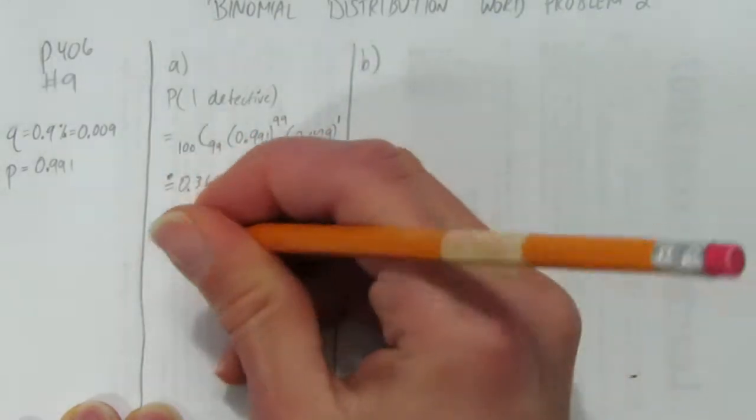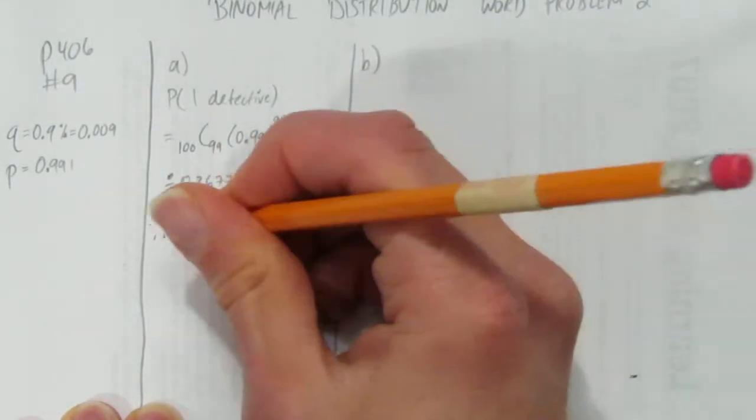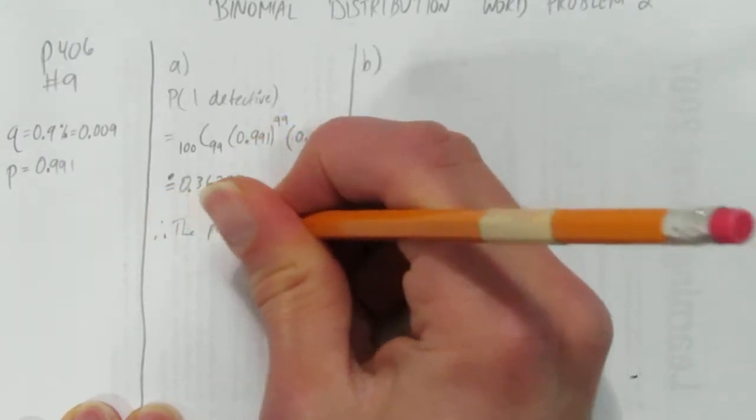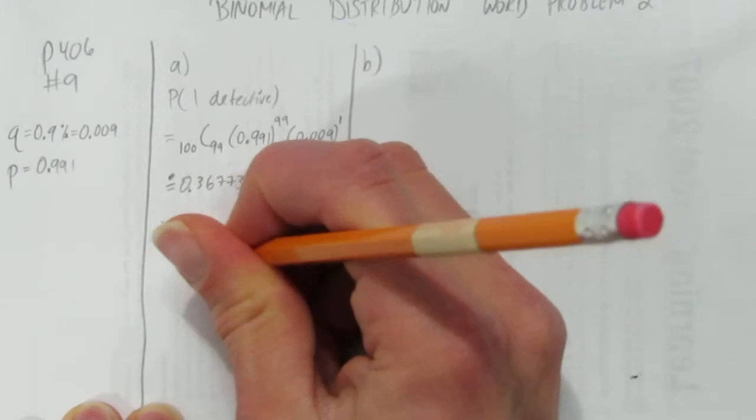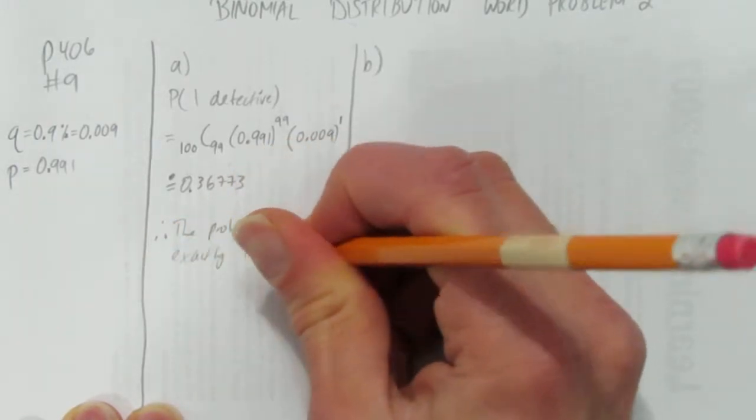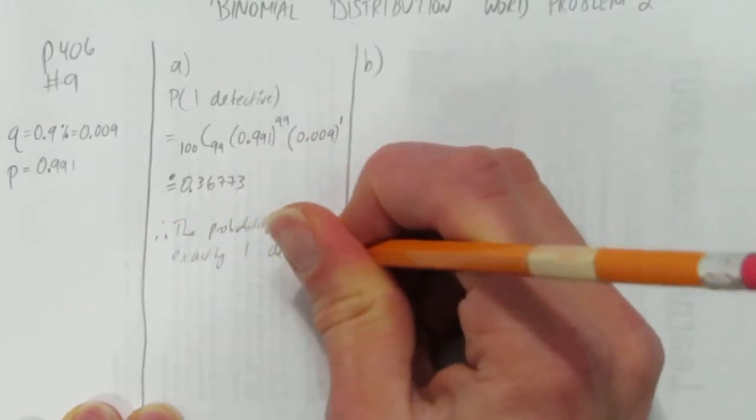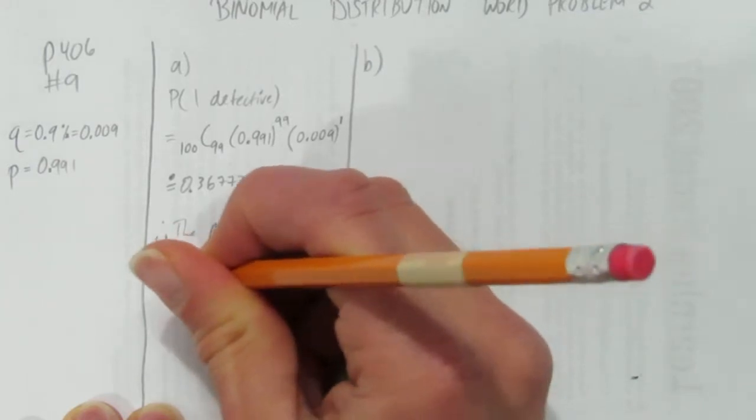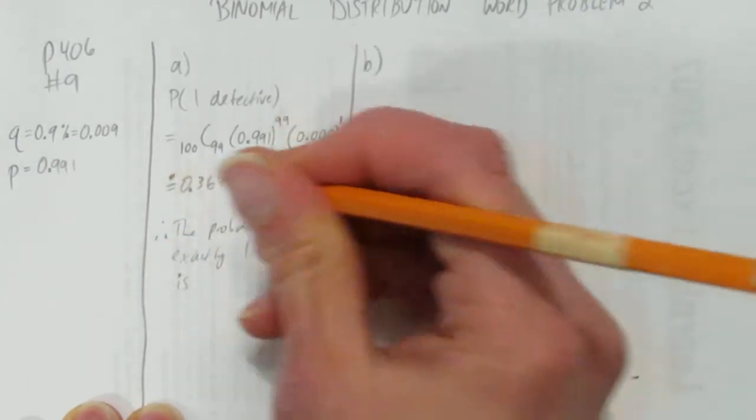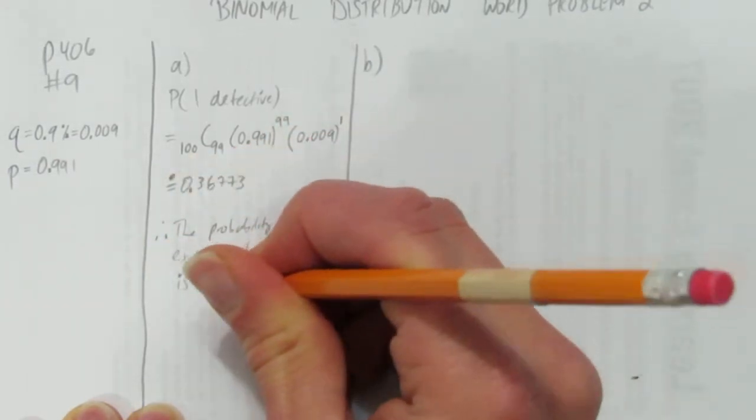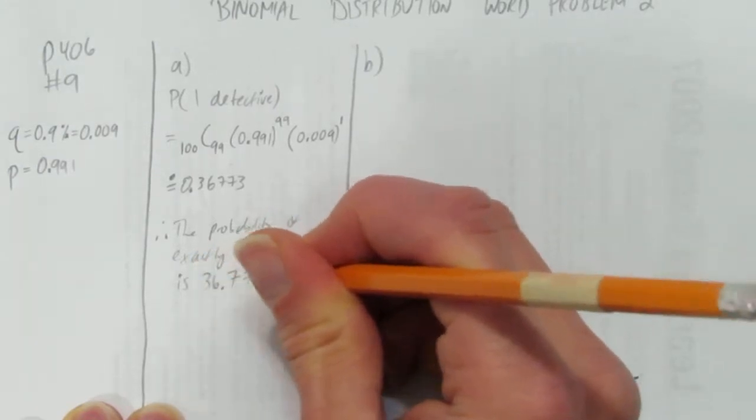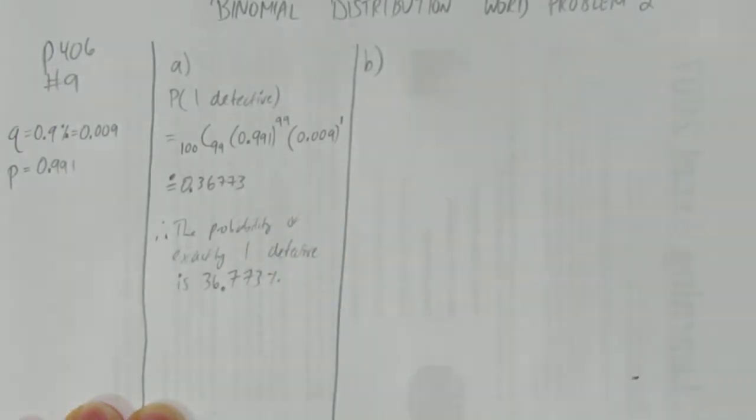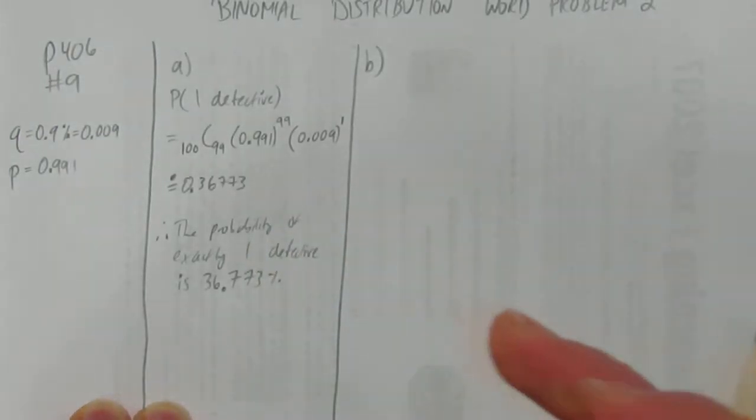So, a simple question with a simple answer. The probability of exactly 1 defective is, you can leave it as a decimal or make it a percent just by moving the decimal over 2 points. We get 36.773%. That's the probability for exactly 1 defective. Question B is a little trickier.